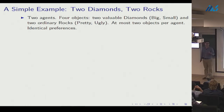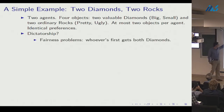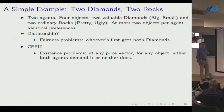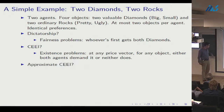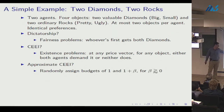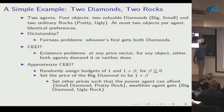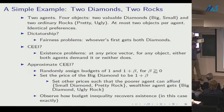In a dictatorship, whoever's first gets both diamonds — an obvious fairness problem. In exact competitive equilibrium from equal incomes, existence fails because at any price vector both agents demand the same bundle. In approximate competitive equilibrium from equal incomes, we randomly assign budgets of 1 and 1 + beta, set the big diamond price to 1 + beta, and the poorer agent gets the small diamond and pretty rock while the wealthier agent gets the big diamond and ugly rock. Budget inequality gives existence — exact in this example, approximate in general.